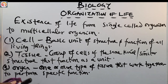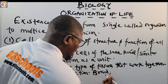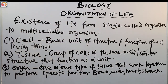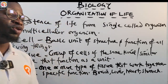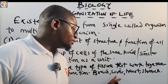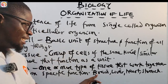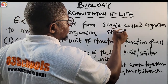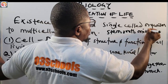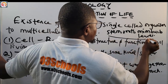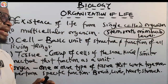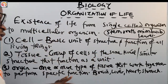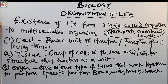Let's look at some organs in humans: we have the brain, the liver, the heart, and the stomach. In plants, the organs include the stem, roots, the onion bulb, and leaves. So those are the organs found in humans and plants — that is the organ level of organization.